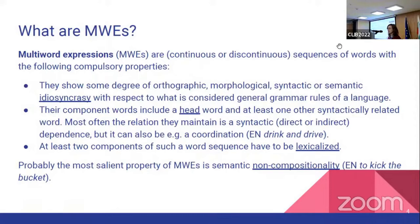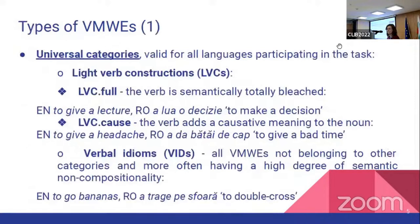Multi-word expressions are defined as continuous or discontinuous sequences of words with the following compulsory properties: they show some degree of orthographic, morphological, syntactic, or semantic idiosyncrasy with respect to what is considered general grammar rules of a language. Their component words include a head word and at least one other syntactically related word. Most often the relation they maintain is a syntactic direct or indirect dependence, but it can also be, for example, a coordination. At least two components have to be lexicalized, and the most salient property is semantic non-compositionality.